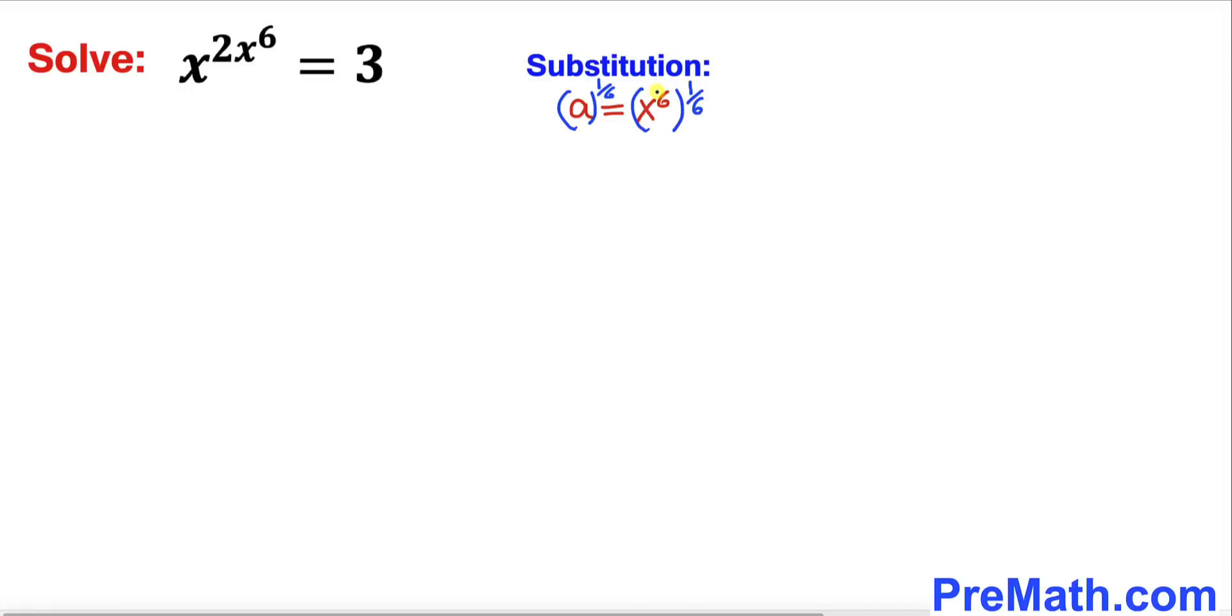And now on the right hand side this 6 and 1 over 6 they cancel each other out. So we simply ended up x equal to a power 1 over 6.